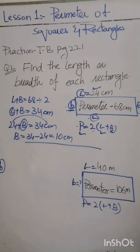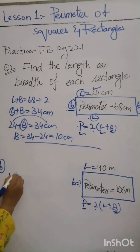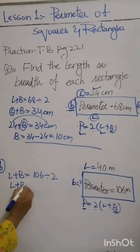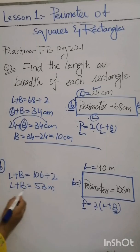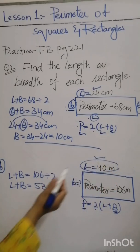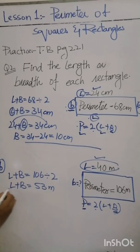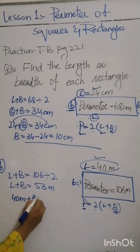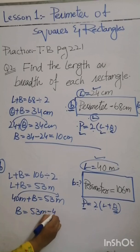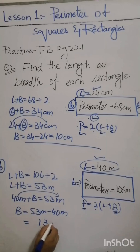If we want to find the breadth, first we divide the perimeter by 2. So length plus breadth equals 106 divided by 2, which gives us 53 meters. The length is given as 40 meters, so 40 + B = 53 meters. We take 40 to the other side: 53 − 40 = 13 meters. So the breadth is 13 meters.